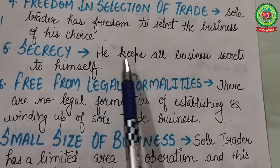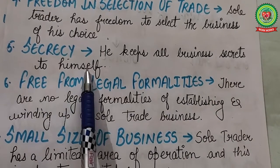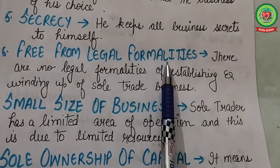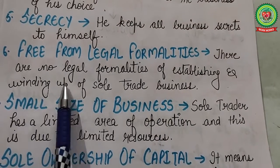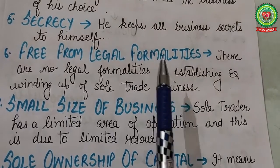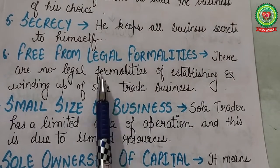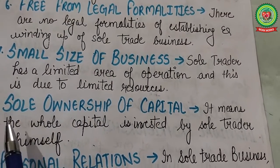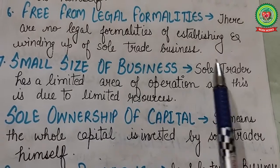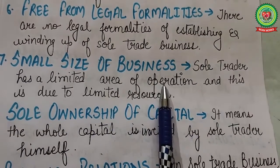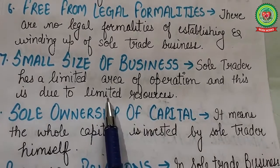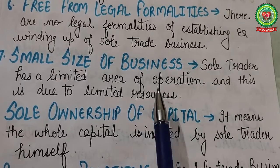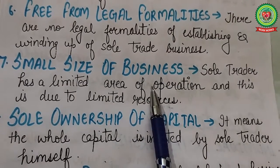Next is secrecy — all important decisions are taken by the owner himself, so he keeps all business secrets to himself. Next is free from legal formalities — there are no legal formalities for establishing or winding up a sole trade business. This type of business can be started as well as discontinued at any time without hurdles. Next is small size of business — the sole trader has a limited area of operation due to limited resources.